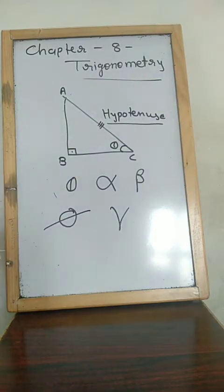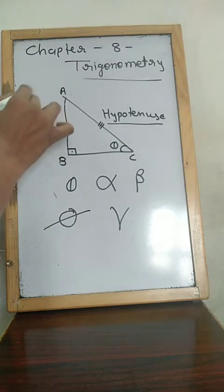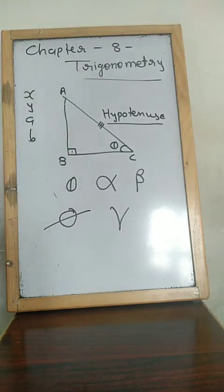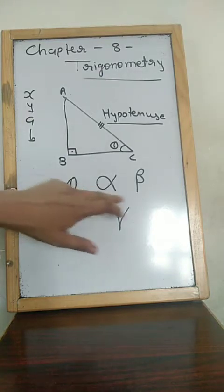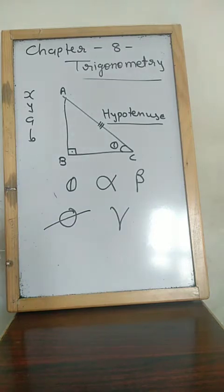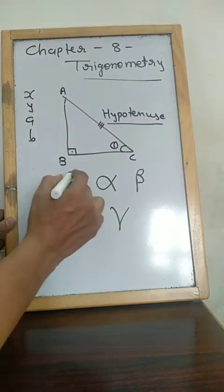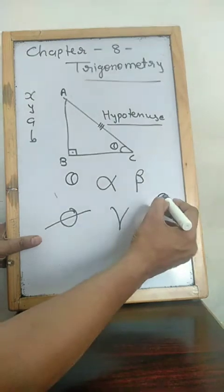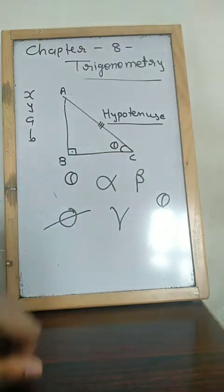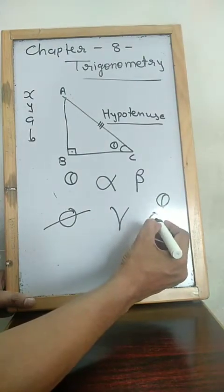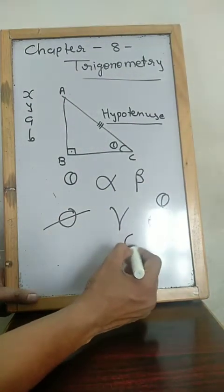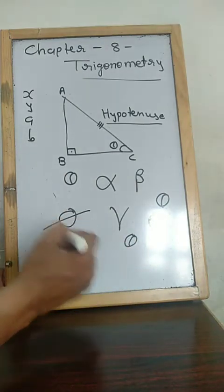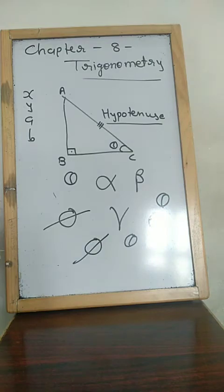Just as for any number we assume x, y, z, or similar variables, for angles we mostly use these Greek letters. So whenever we need to assume an angle, we will mostly use theta. Note that theta and phi look similar — phi has a longer line — so don't mix them up.